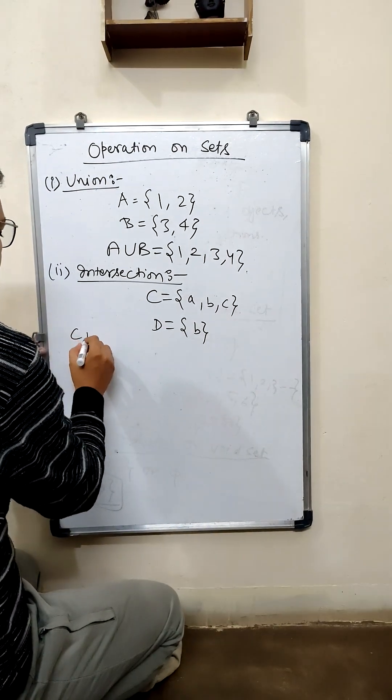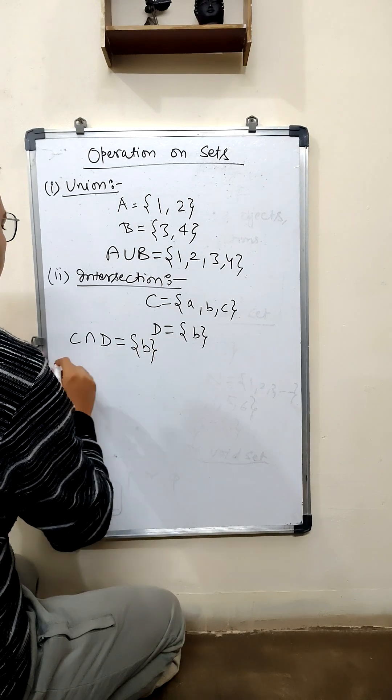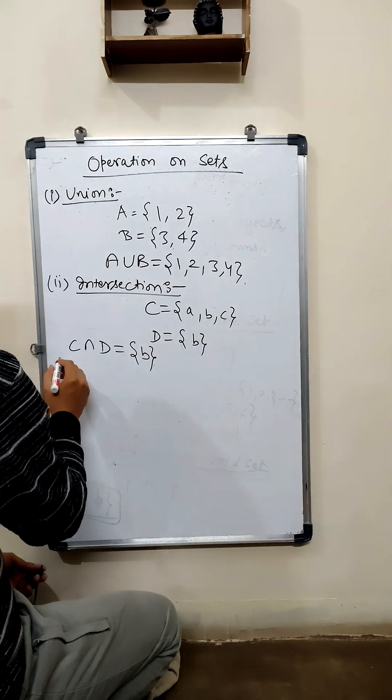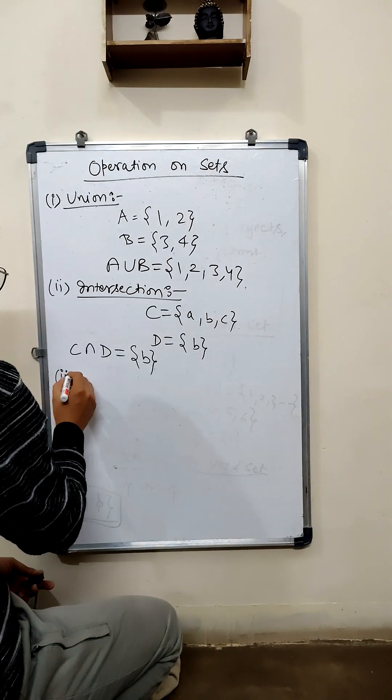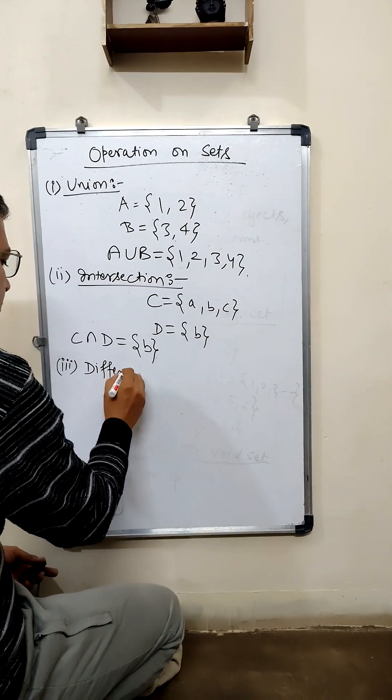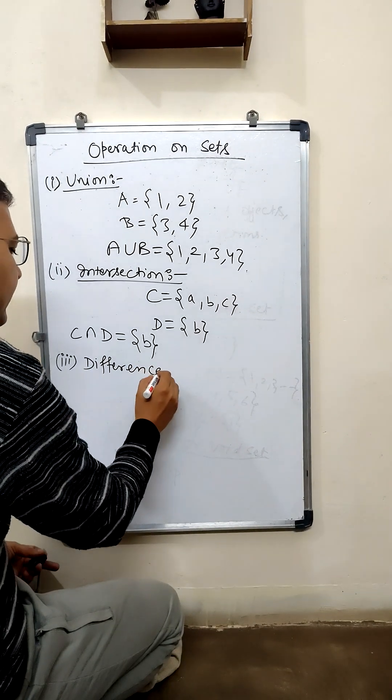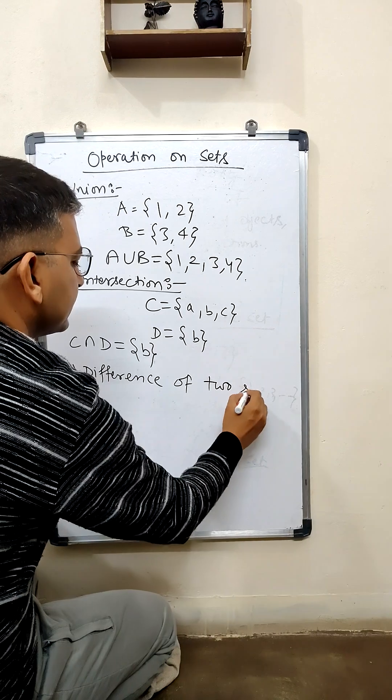So C intersection D will be b. Next we will discuss the difference of two sets.